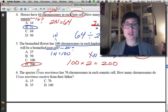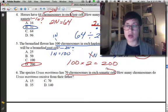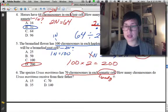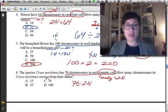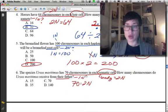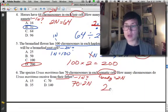Alright. So, for number 6 it says, in species ursus has 70 chromosomes in each somatic cell. Somatic cells are body cells. That's important. Body cells are always 2N. So, I know that 70 equals my 2N number. How many chromosomes would they get from their father? So, I'm looking for the 1N number. That is my unknown in this case. So, I'm going to go from 2N to 1N.